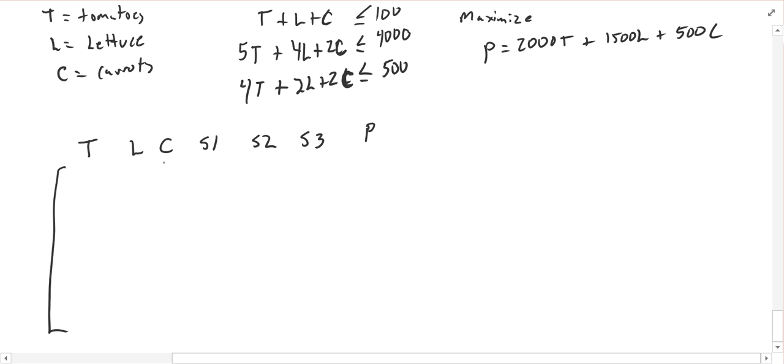All right, and with that first equation, I'm going to have 1 as the coefficient for T, for L, and for C. I'm going to add my first slack variable there into S1, so it'll have a 1. There's no S2 or S3 or P in that equation, and it equals 100. My second equation would be 5T, 4L, 2C, 0, 1, 0, 0, and then 4,000.